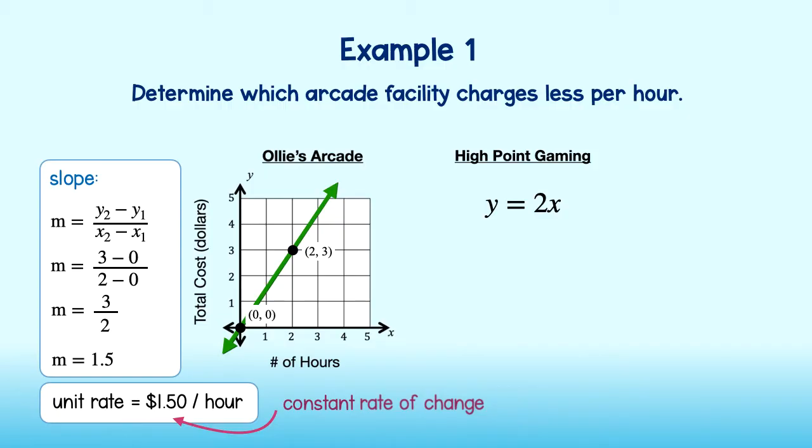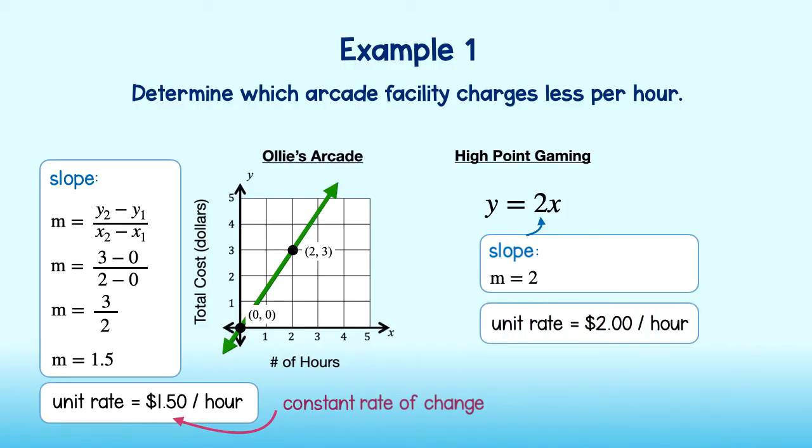Okay, now let's take a look at the equation for High Point Gaming. This equation is in the form y equals mx, where m represents the slope. Since the slope is 2, the unit rate is 2, which tells me that High Point charges $2 per hour. If Harley and his friends want to go to the less expensive arcade, they should choose Ollie's Arcade.